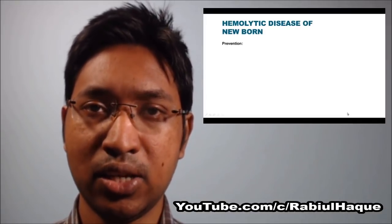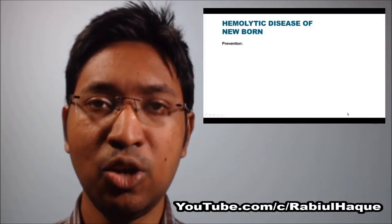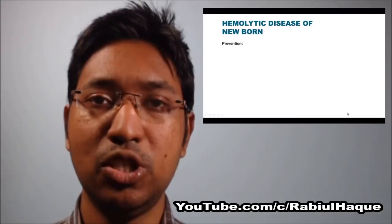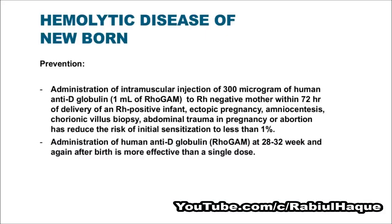Now we will talk about prevention of hemolytic disease of newborn. Administration of an intramuscular injection of 300 micrograms of human anti-D immunoglobulin to an Rh negative mother within 72 hours of delivery of an Rh positive infant, ectopic pregnancy, amniocentesis, chorionic villus biopsy, abdominal trauma in pregnancy, or after abortion has reduced the risk of initial sensitization.